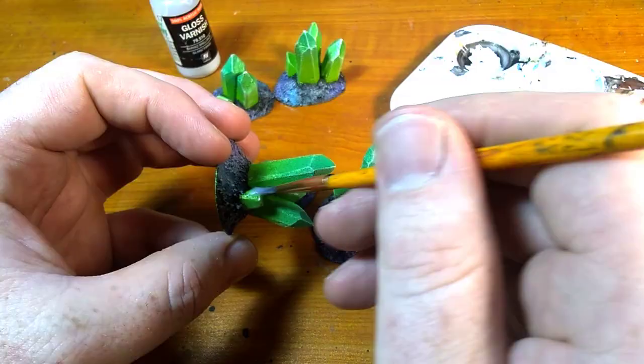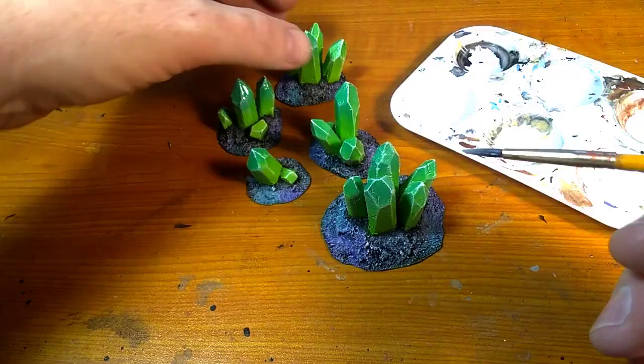After I spray the crystals with matte varnish I bring them back to my desk and add a liberal coat of gloss varnish. This will give them a glass-like surface and add a touch more realism to the build.